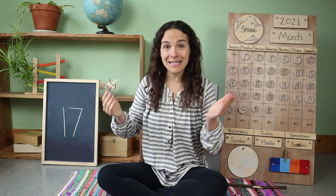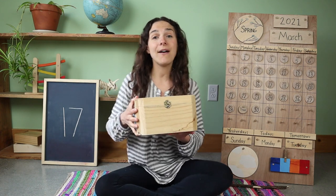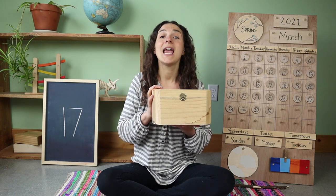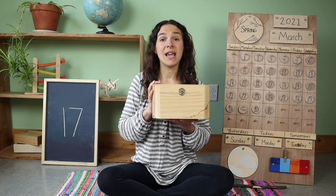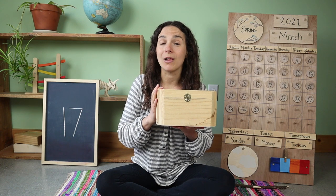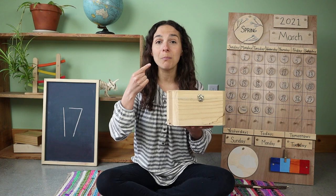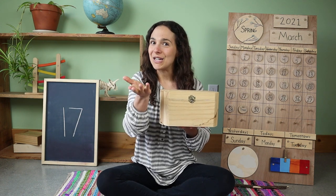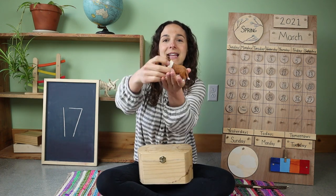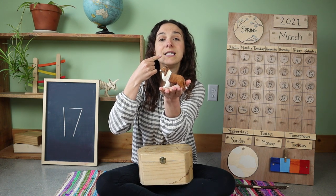Now it's time to guess what's inside of the letter box today. Inside this box I have something that starts with the letter d. Here's your first clue: this is a type of animal. This animal can be big or small. Many people have these animals for pets. And this animal says 'bark bark' or 'woof woof.' Do you know what it is? Let's take a look. It's a dog! A dog starts with the letter d.